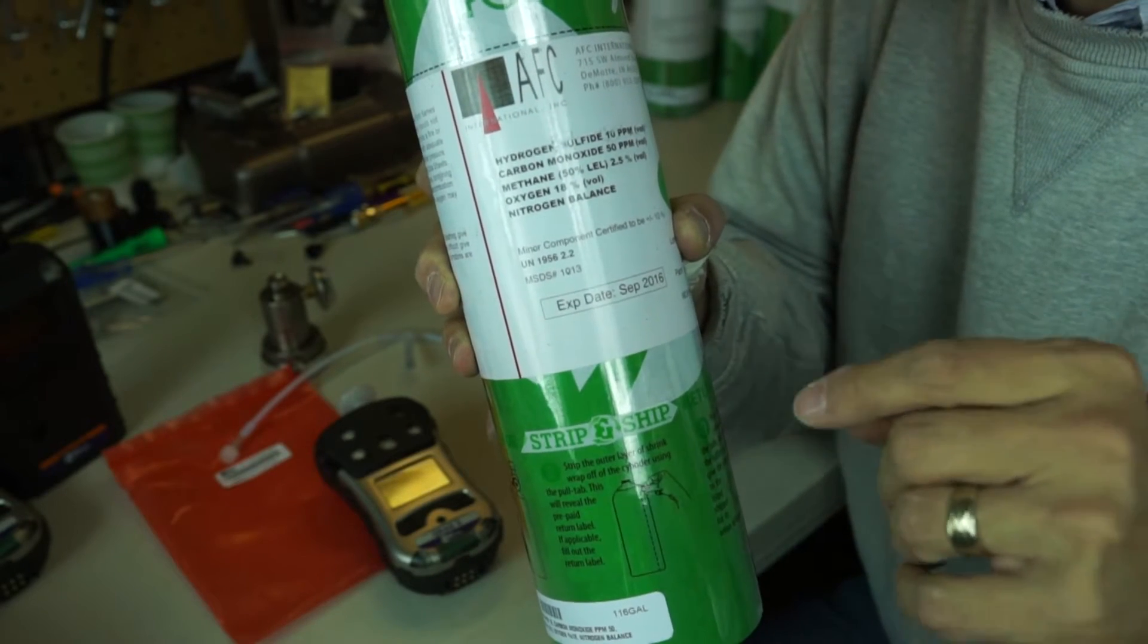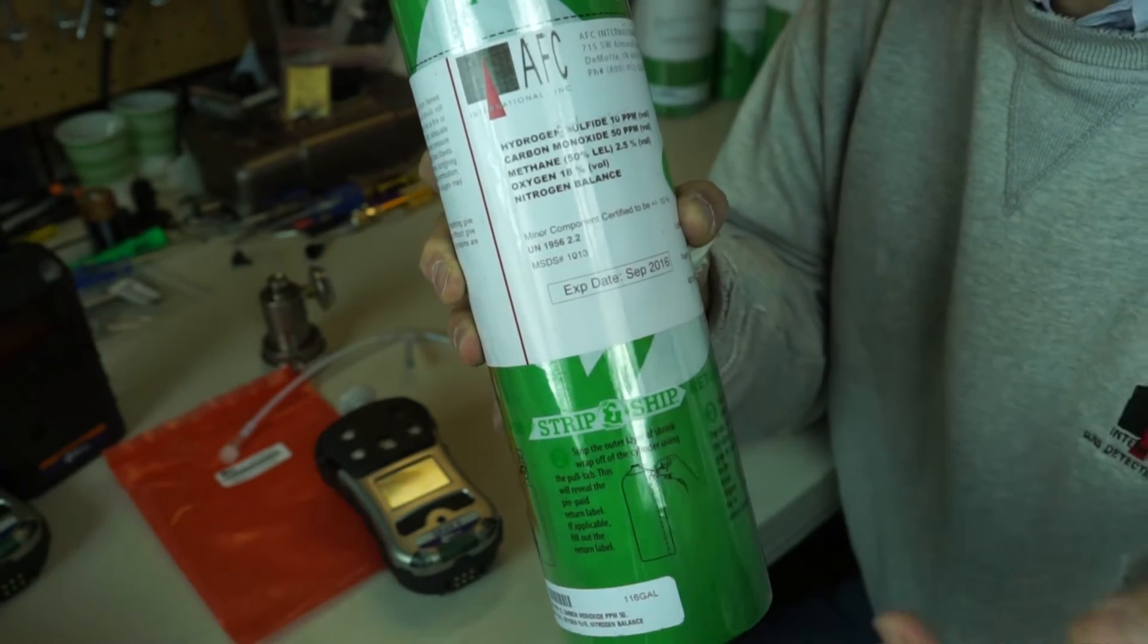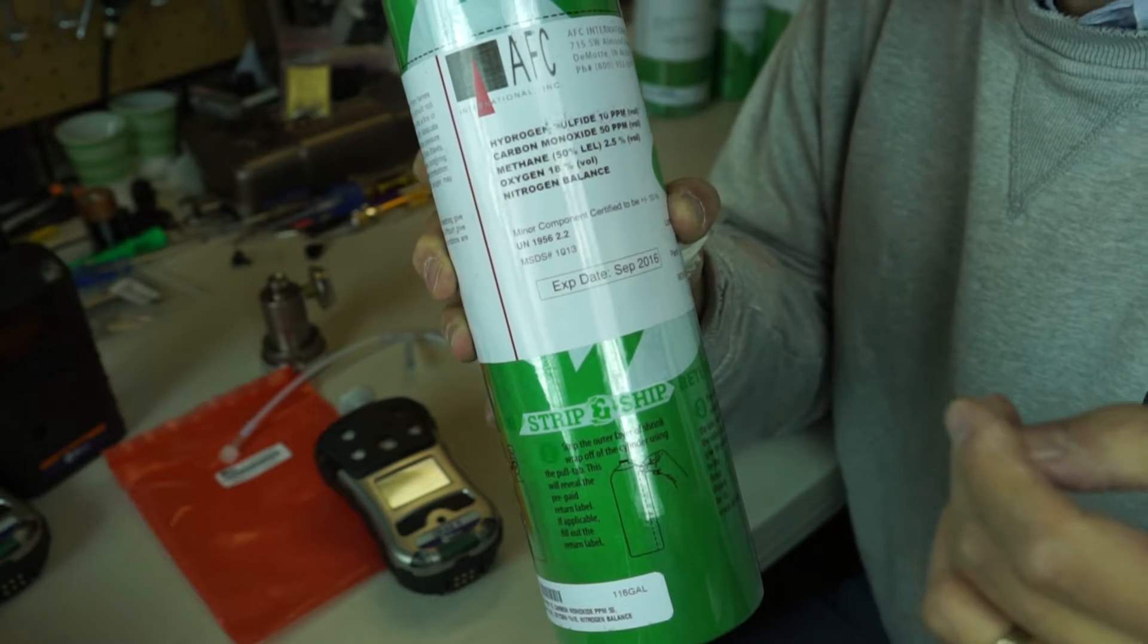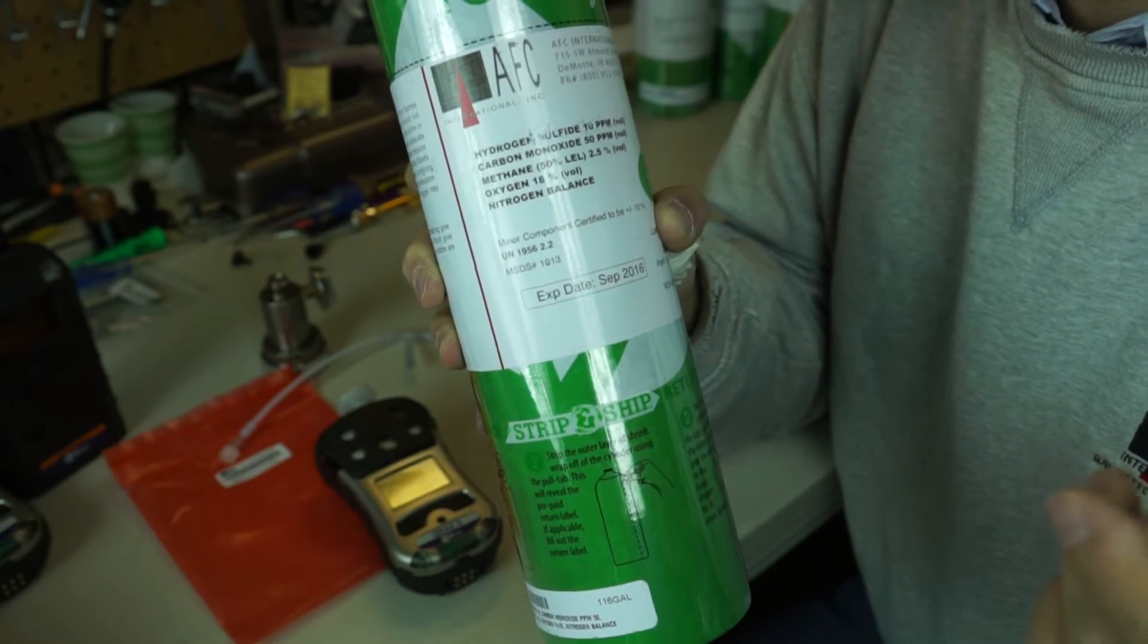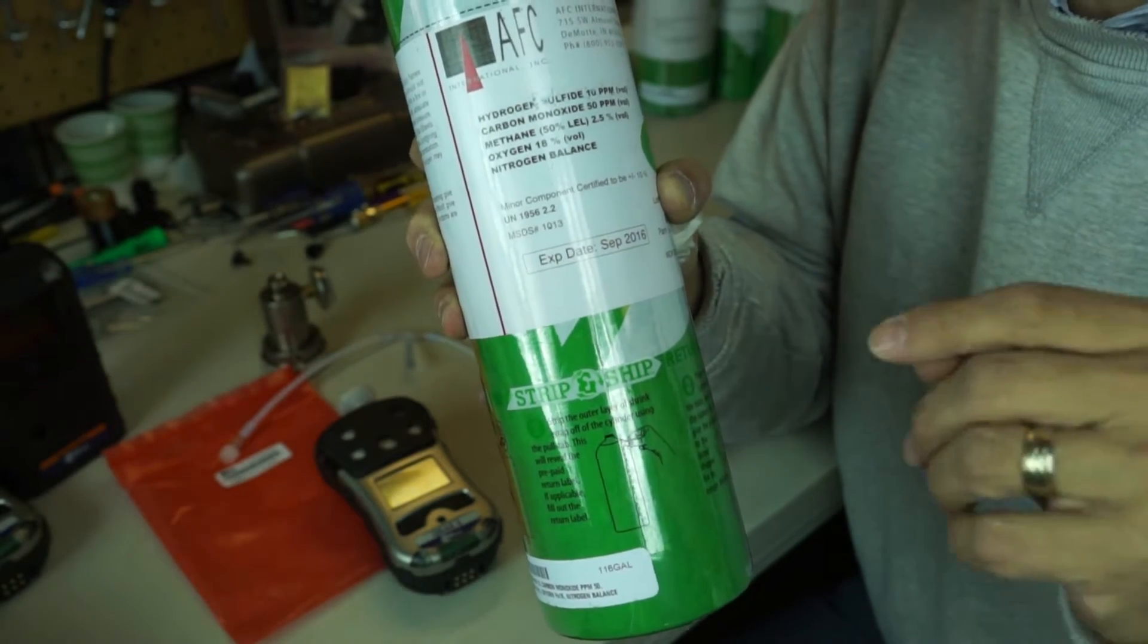But what's important here is we have to use the exact same concentrations the manufacturer asks for in their instrument. Now the Q-Ray 3 is asking for 50 percent LEL methane, 10 part per million H2S, 50 part per million carbon monoxide, and 18 percent oxygen.